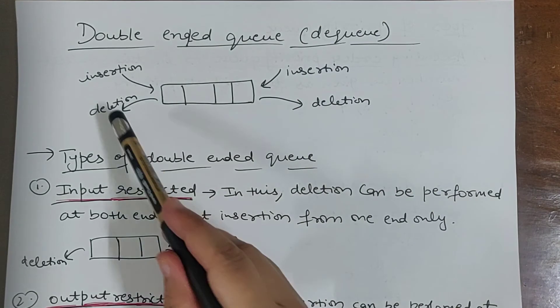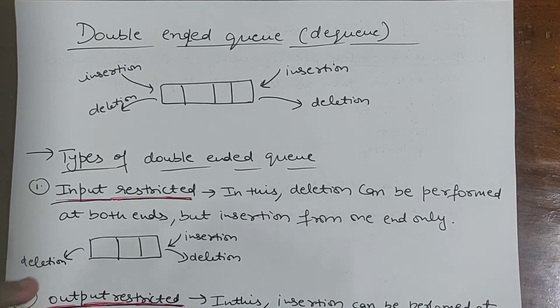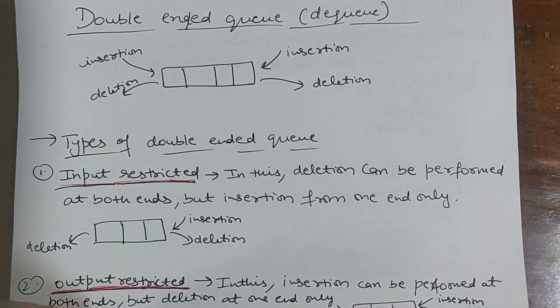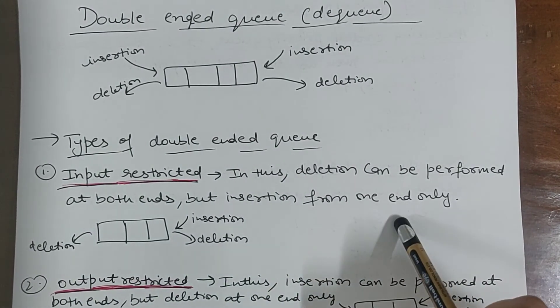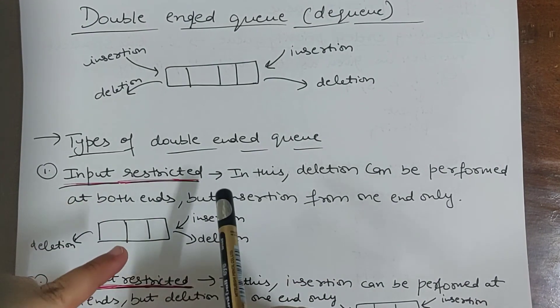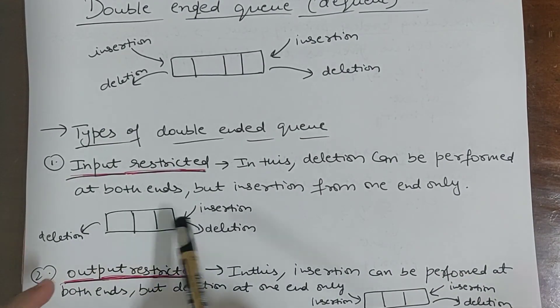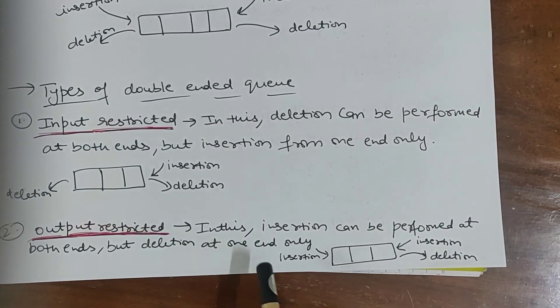Now types of double ended queue: first is input restricted. Input restricted means insertion from one side. Output restricted means deletion from one side, deletion from both ends.